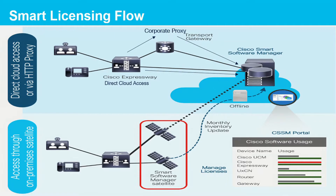Method 2: Access through the CSSM on-premise satellite server. This option uses a customer's internal collection device called the Cisco Smart Software Satellite. The satellite server periodically transmits licensing information into the cloud using a periodic network synchronization. In this instance, only the customer's system or database transferring information to the cloud is the Cisco satellite server.